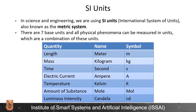In science and engineering, we use SI units, or International System of Units, also known as the metric system. There are seven base units: length is measured in meters (m), mass in kilograms (kg), time in seconds (s), electrical current in amperes (A), temperature in Kelvin (K), amount of substance in moles (mol), and luminous intensity in candelas (cd).